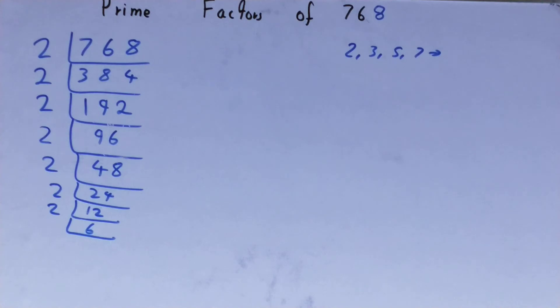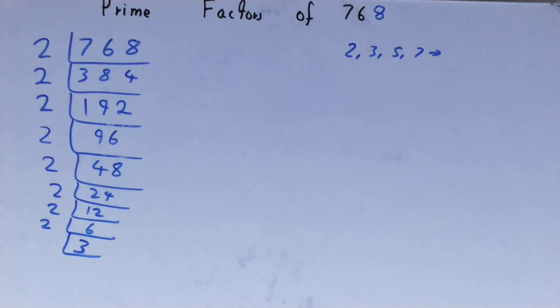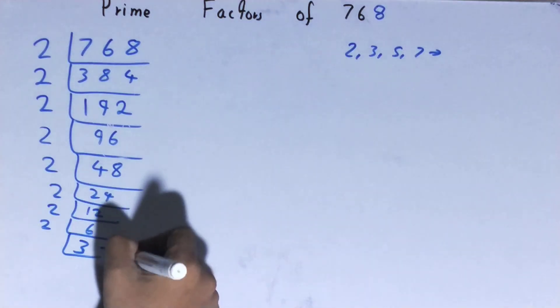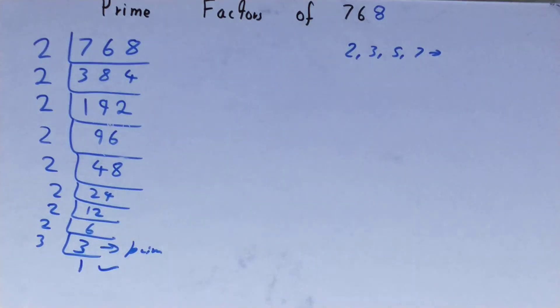6 is divisible by 2 and you'll be left with 3. 3 is not divisible by 2 because 3 is itself prime, so to divide this 3 you need 3 on the left hand side. When you do so, you'll be left with 1, and once you get 1 the work is done.